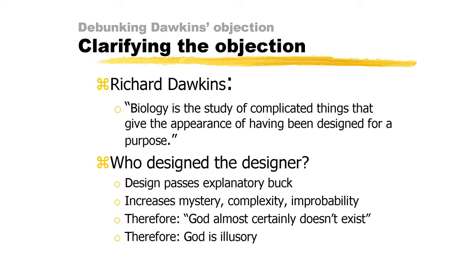More specifically, Dawkins argues that because the complexity of the natural world — its apparent design — is highly improbable, and because the intelligent designer must be at least as complex as the natural world, it follows that the intelligent designer must be at least as improbable as the natural world. But this is to explain one improbability by another improbability at least as great as or greater than the first improbability. What is worse, for the intelligent design proponent, the question of the origin of the designer adds yet another layer of improbability, and so on ad infinitum. Because of this unending regress of additional improbability, Dawkins thinks that the God hypothesis is not a reasonable explanation for the apparent design found in nature.